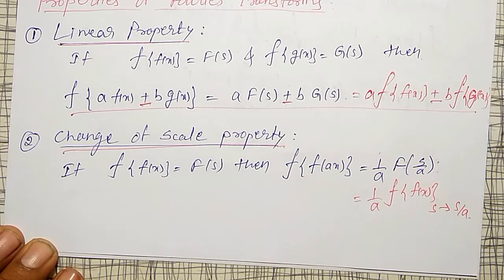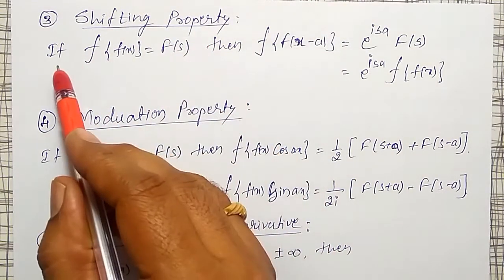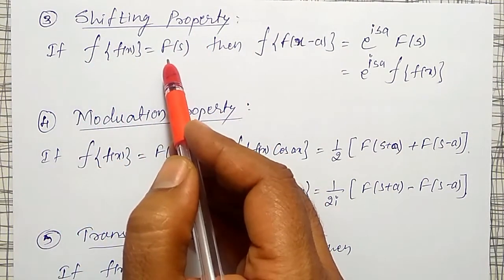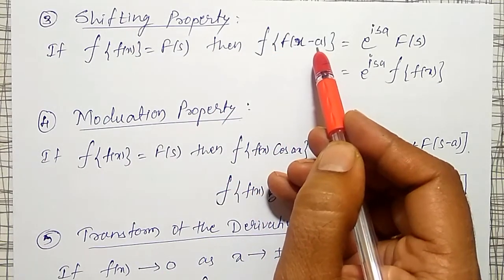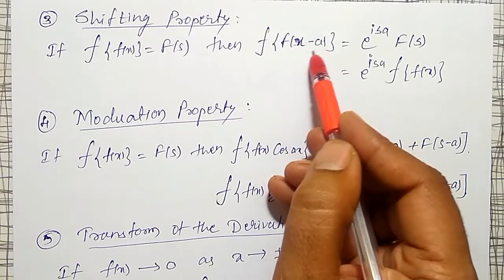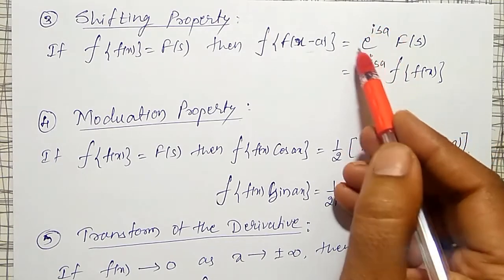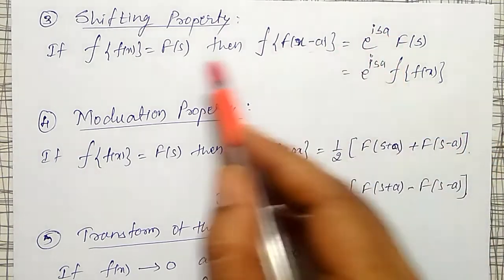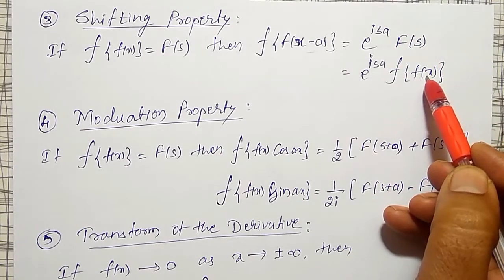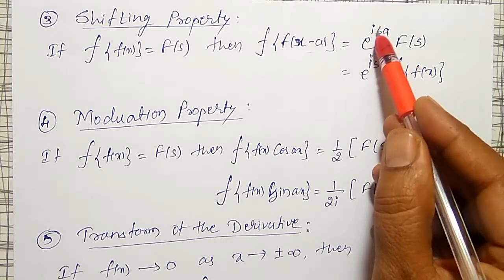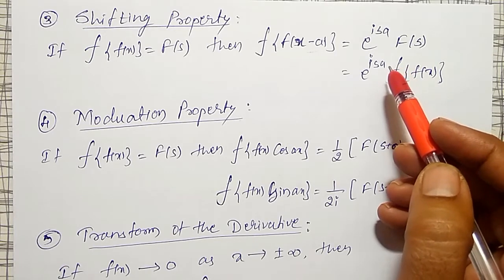Next is the shifting property. If the Fourier transform of f(x) is equal to capital F(s), then the Fourier transform of f(x − a), where x is replaced by (x − a), its Fourier transform becomes e^(isa)·F(s), that is, extra multiplied by e^(isa) into F(s), which is the Fourier transform of f(x).